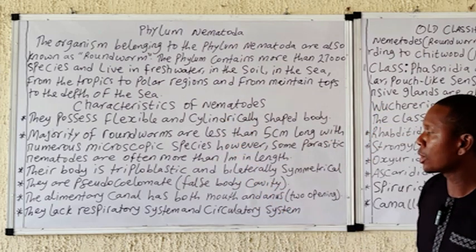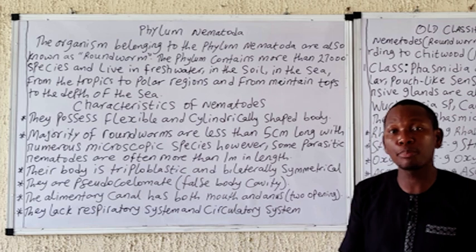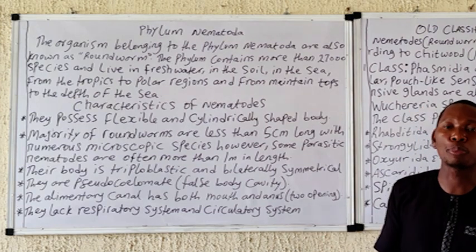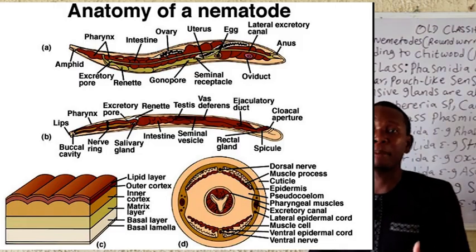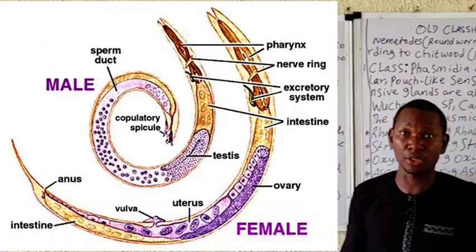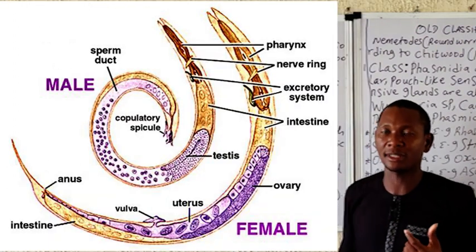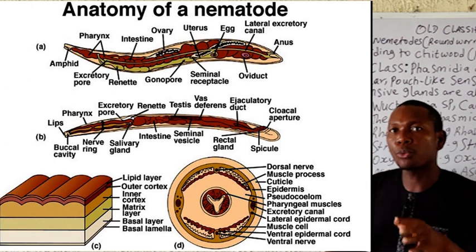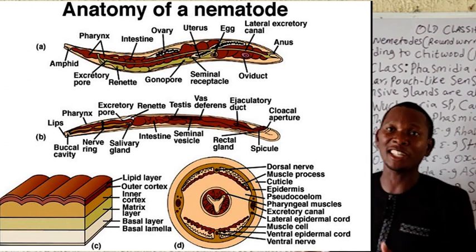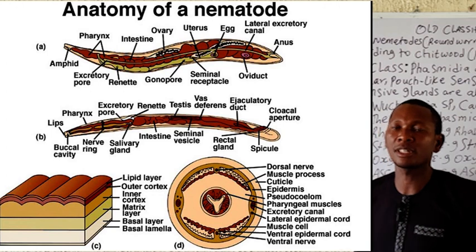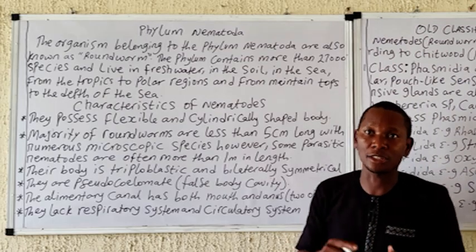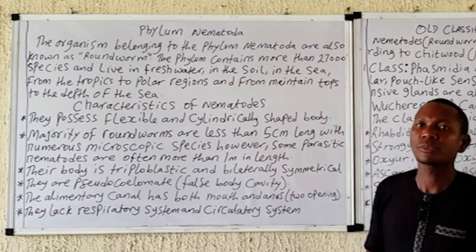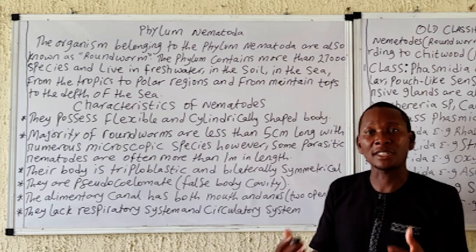Some nematodes actually feed on bacteria, fungi, and even other nematodes. The characteristics of the phylum Nematoda include a flexible body that is often cylindrical in shape. Their body is triploblastic and bilaterally symmetrical. As you can see from the diagram displayed on the board, they are tapered at both ends. They possess a cuticle — an outer covering that is relatively thick — produced by the hypodermis.